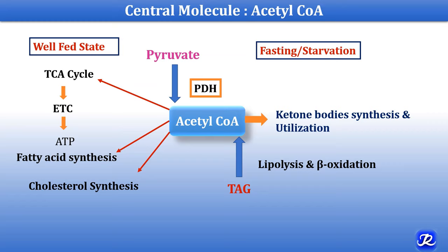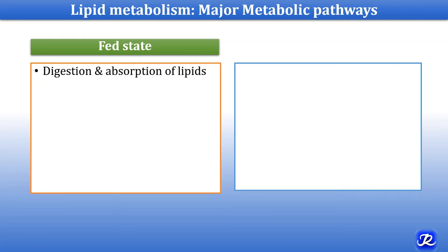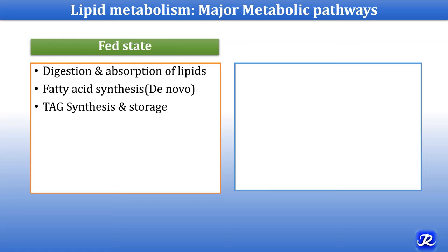Let's understand major metabolic pathways of lipid in two states: well-fed state, and fasting and starvation. The major metabolic pathways in the well-fed state are: first, digestion and absorption of dietary lipids; second, de-novo synthesis of fatty acids; third, storage of fatty acids in the form of triacylglycerol — so triacylglycerol synthesis and its storage.